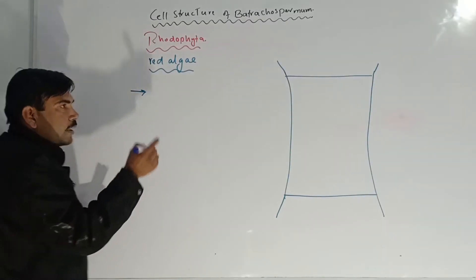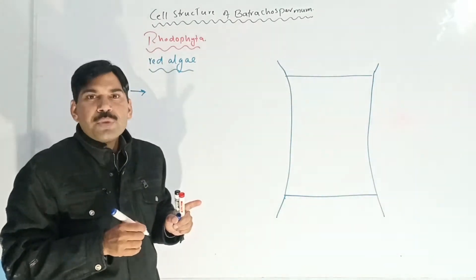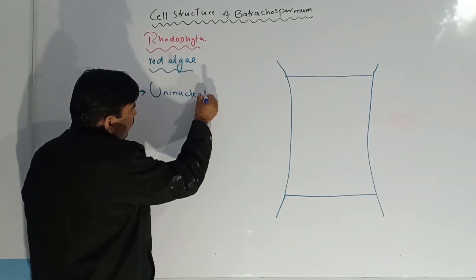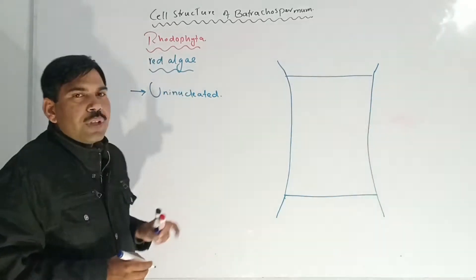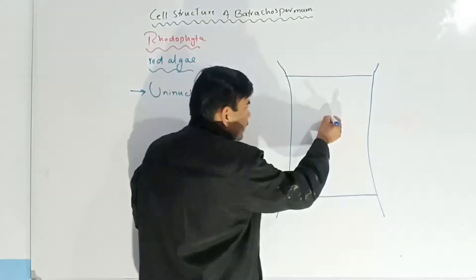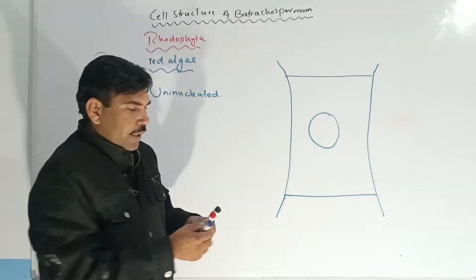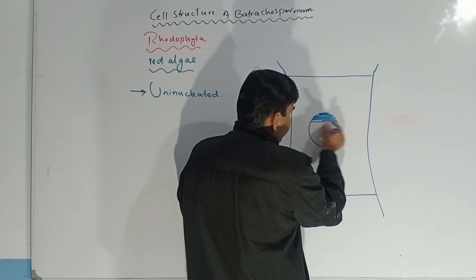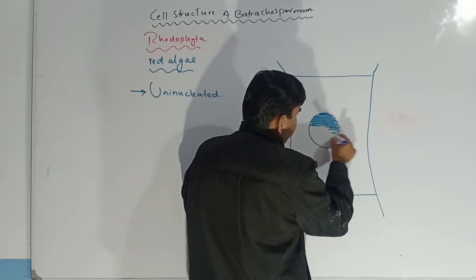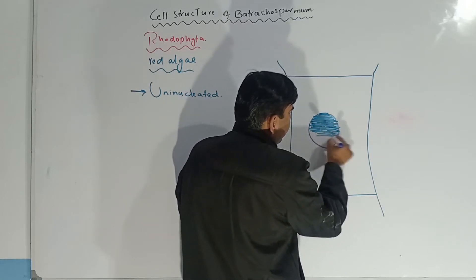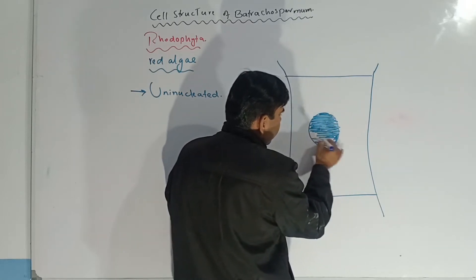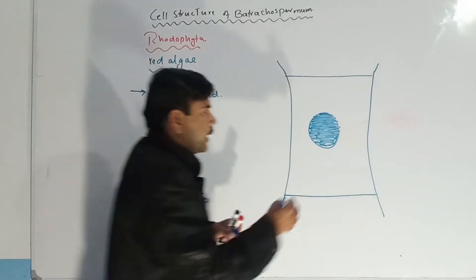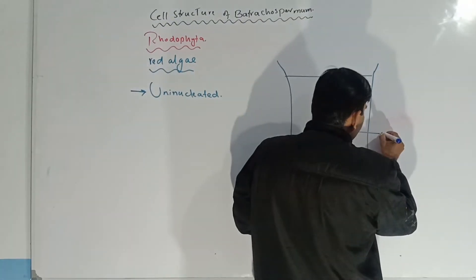When we talk about the cell structure of Batrachospermium, we can say that this cell is uninucleated. The word uninucleated means only a single nucleus is present. This nucleus contains genetic material inside, so that is why we call it uninucleated.